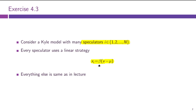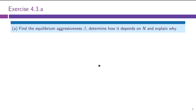So this is the problem setup. We have not even asked any questions yet. Here's the first one: find the equilibrium aggressiveness of the traders beta, and determine how it depends on N and explain why. So basically, we need to solve for speculators' best response to the behavior of all other agents in the market — other speculators and the dealer who sets the price schedule. So let us go to the blackboard. I will type things in real time, and you tell me if the font is too small or too large.